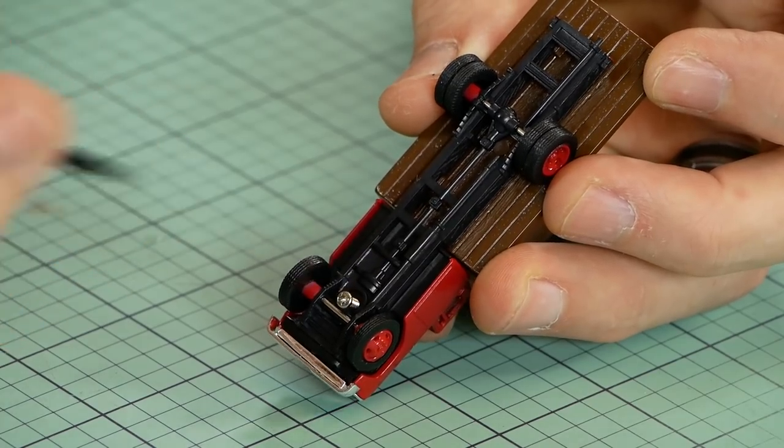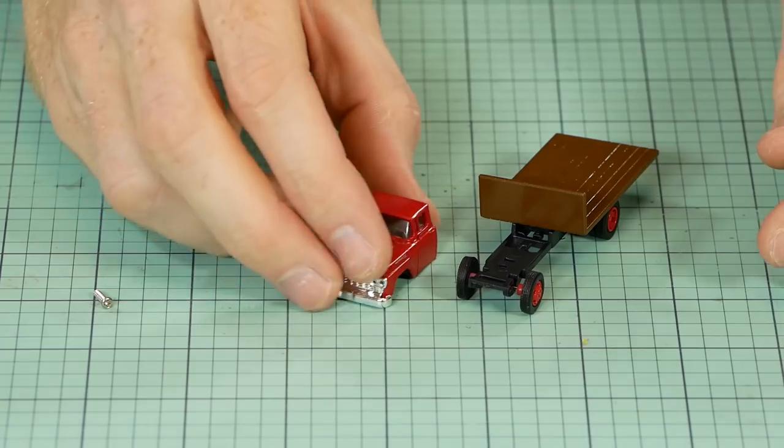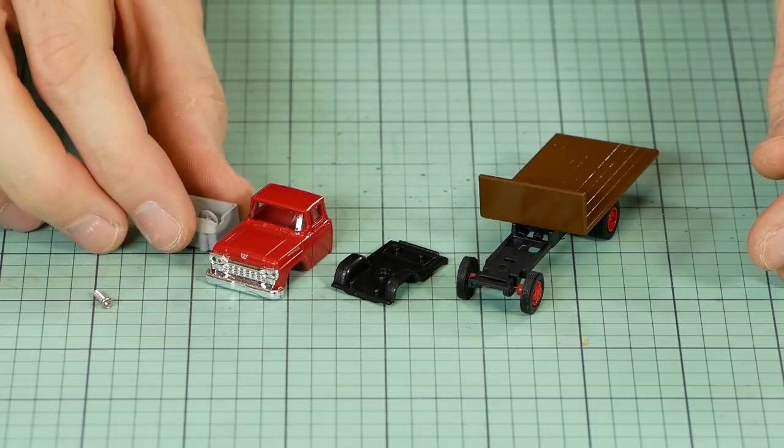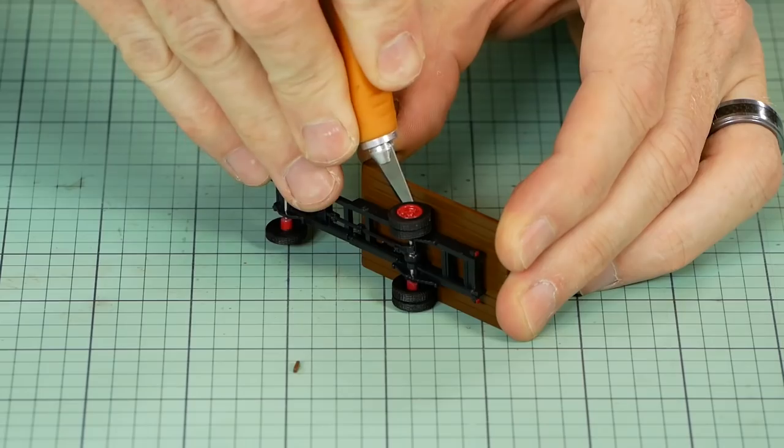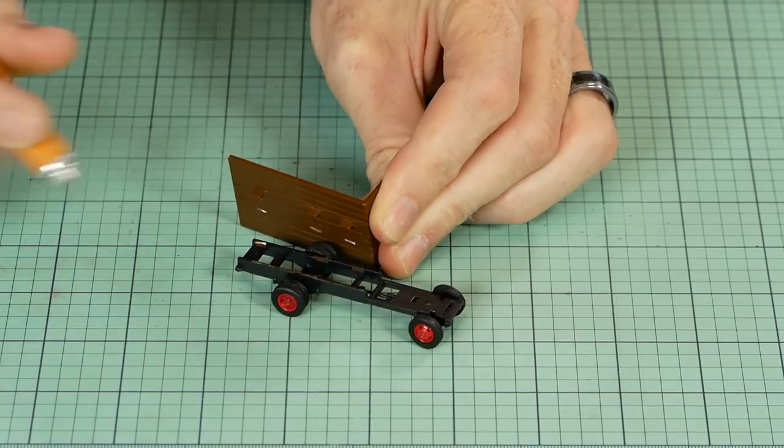To dismantle this truck there's simply one screw that gets removed and the rest basically falls away. The flatbed on the other hand has been glued down, but with a sharp knife and a little bit of care you can cut the flatbed away from the chassis with no damage.